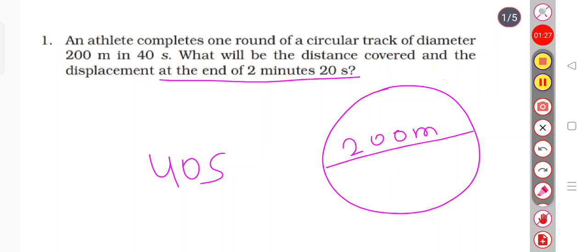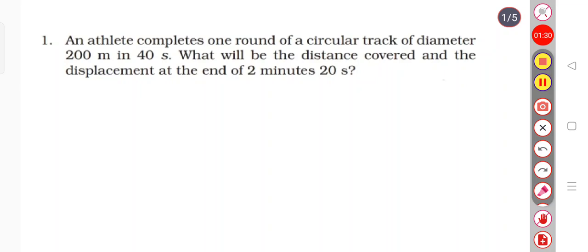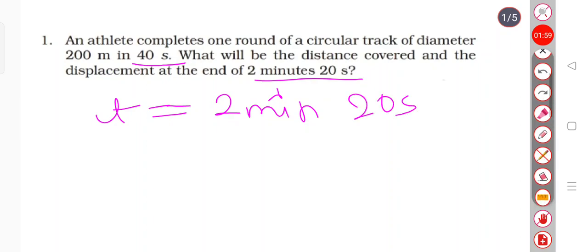So let's solve this. Before doing that, it is really important to have time in one unit, because they have given time in seconds and minutes. So you have to convert it to seconds and then this question will be solved. So let's do that first. Time given is 2 minutes and 20 seconds. 2 minutes equals 120 seconds plus 20 seconds. So now we add it to get 140 seconds.